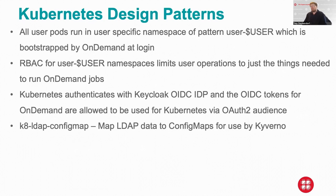Some design patterns: all user pods are in a namespace with a user-prefix within their username. These namespaces are bootstrapped by OnDemand when they log in, and roles and access controls are given to them in their namespace to allow just enough to run OnDemand HPC jobs. Kubernetes authenticates with our Keycloak IDP, and the OIDC tokens for OnDemand are allowed to be used with Kubernetes thanks to an OAuth 2 audience. We also deployed a tool we wrote called k-ldap-config-map, which maps LDAP data into config maps that can be used by Kyverno.